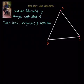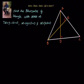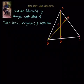The orthocenter is the point of intersection of altitudes. An altitude is the line segment drawn from a vertex perpendicular to the opposite side. One altitude is from A perpendicular to BC, another altitude from B perpendicular to AC. So AD is one altitude and BE is another altitude. The point of intersection of AD and BE is the orthocenter — let us call it H.